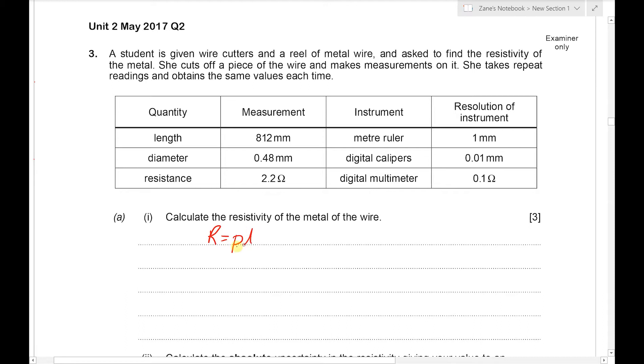Well in the data books we have R equals rho L over A. So rho is R A over L. Resistance is 2.2 ohms. To calculate the cross-sectional area is pi times the radius squared. The radius is half of the diameter.